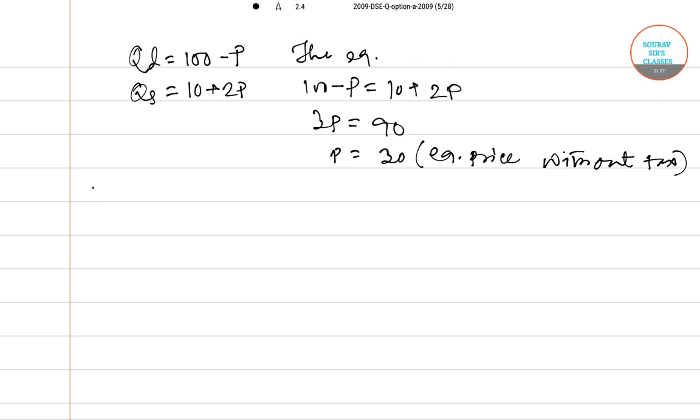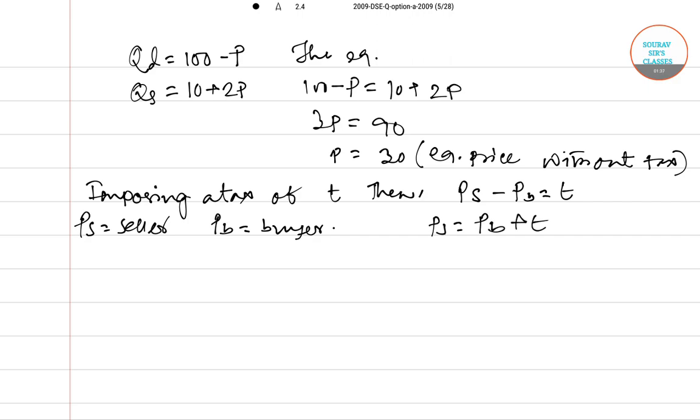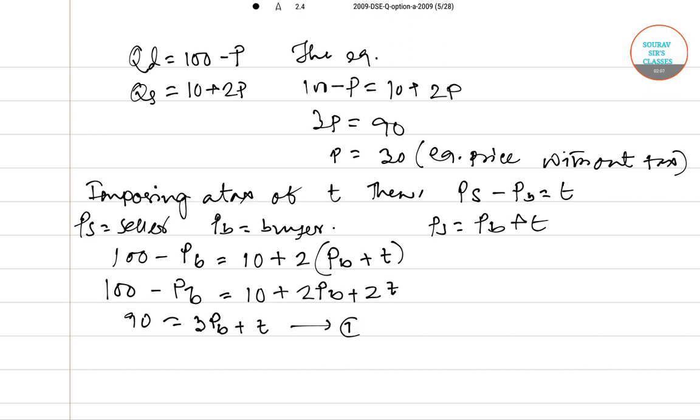Now after this we are imposing a tax of suppose T. Then we have PS minus PB equals T, where PS is the price of seller and PB is the price of buyer. So PS equals PB plus T. Then we have 100 minus PB equals 10 plus 2 times PB plus T. So we have 90 equals 3PB plus 2T. This is equation number one.